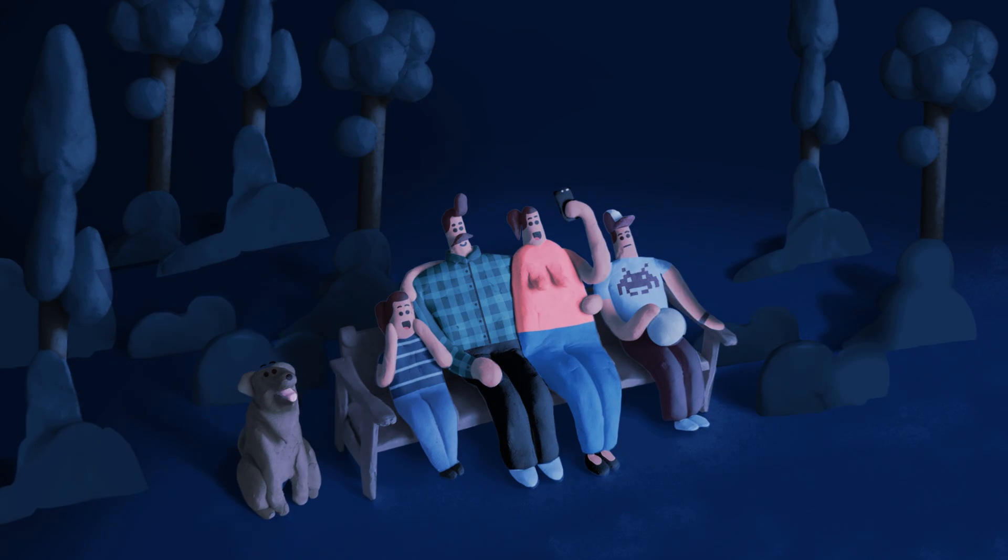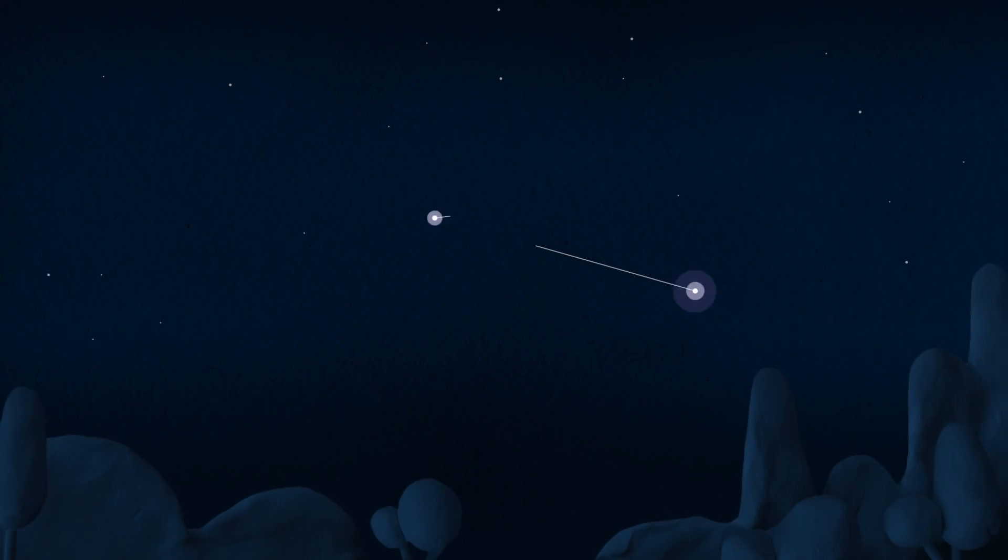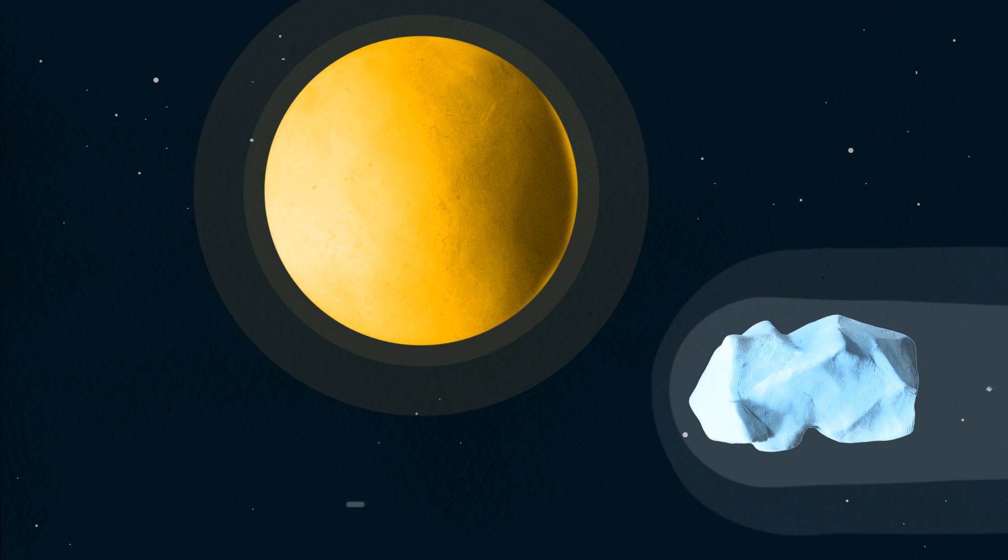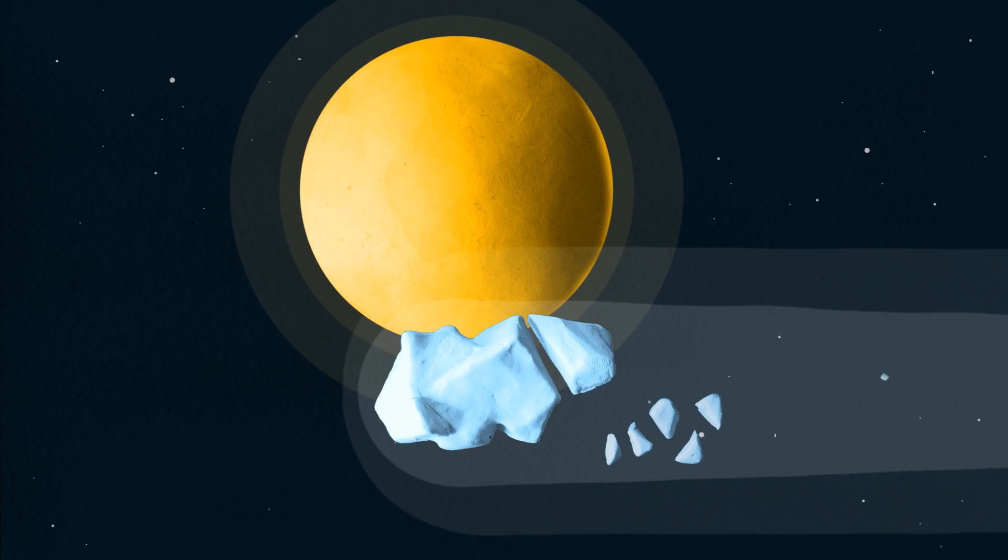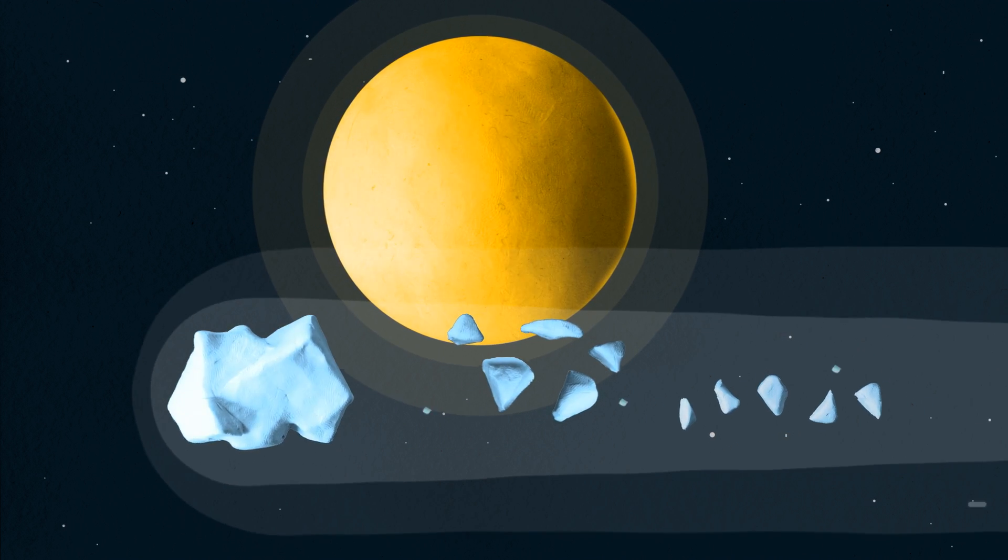Here on Earth, we are treated to spectacular natural firework displays in the sky from orbiting comets. As they get close to the Sun, they burp, splutter and crumble, leaving behind a trail of debris.